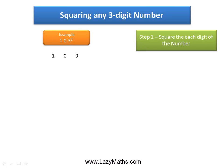The first step is to square each digit of the number. We start with 1: 1 squared, which is 1 times 1, is 1. 0 squared, which is 0 times 0, is 0. 3 squared, which is 3 times 3, is 9.